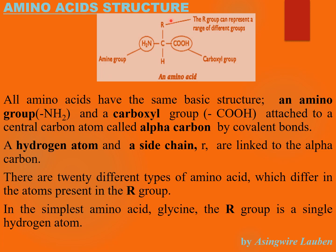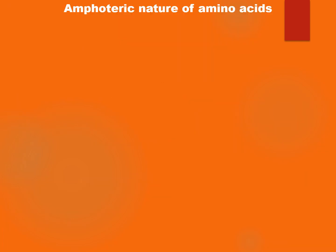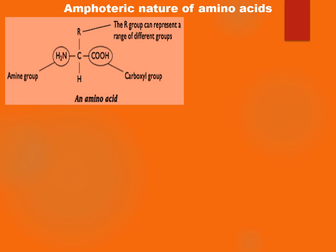Before we look at that, let us first look at the amphoteric nature of amino acids. When we talk of the word amphoteric, what do we mean? An amphoteric substance is one that has got both basic and acidic properties. Now, how does the amino acid behave as an amphoteric substance?